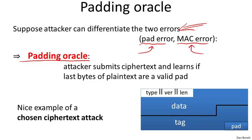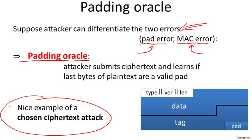As a result, after submitting the ciphertext to the server, the adversary can tell whether the last bytes in the decrypted ciphertext have a valid pad or not — in other words, whether the last bytes end with 01, or 02 02, or 03 03 03, or 04 04 04 04, and so on. So the adversary learns something about the decrypted ciphertext just by submitting the ciphertext to the server. This is a beautiful example of a chosen ciphertext attack, where the adversary submits a ciphertext and learns something about the resulting plaintext.